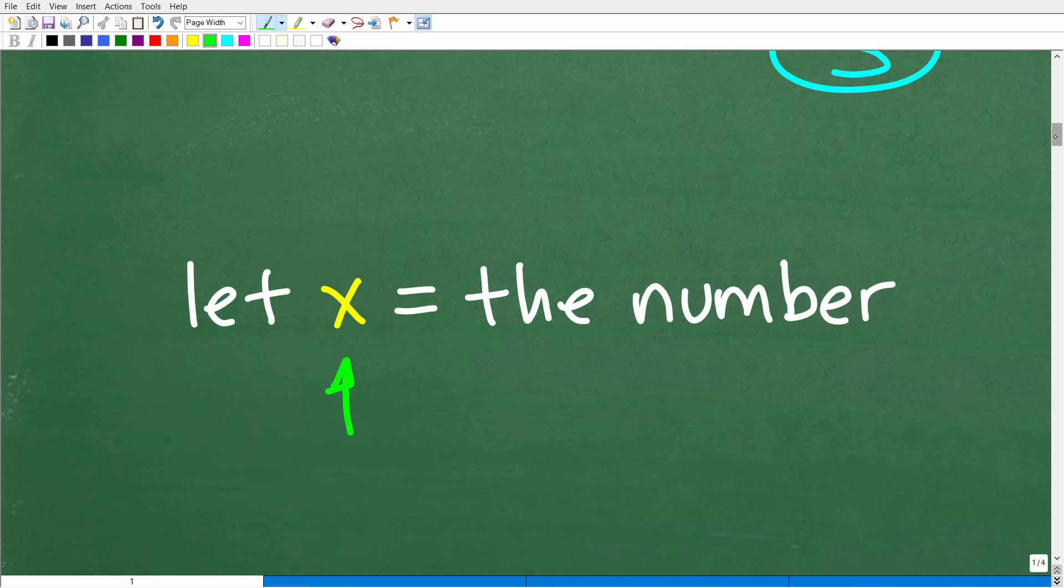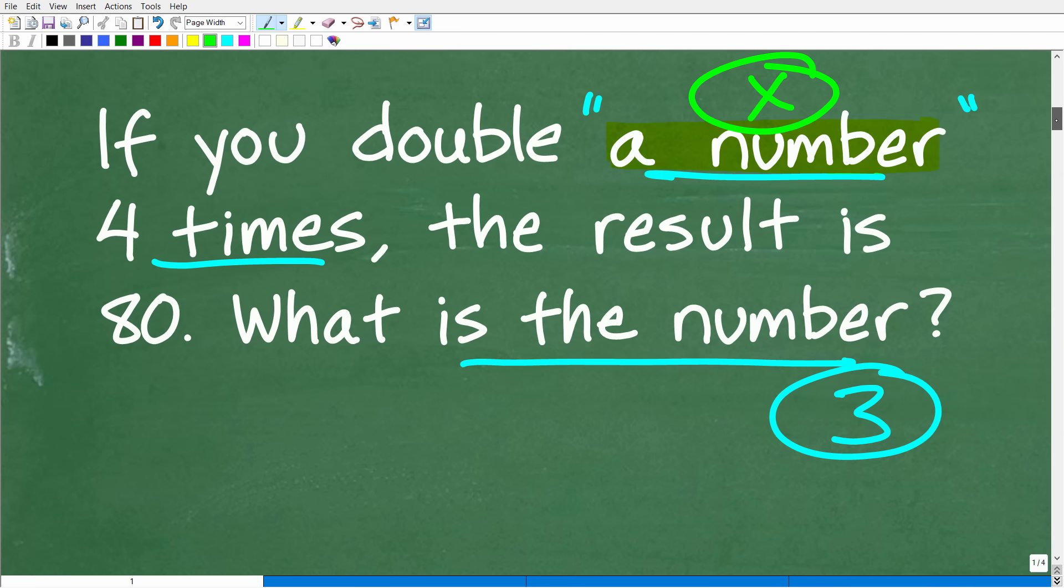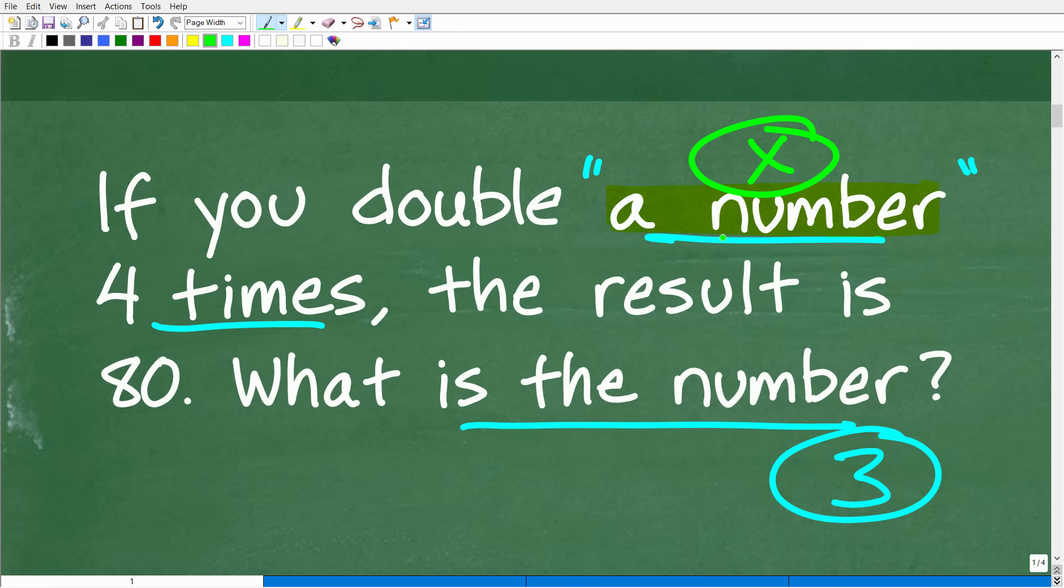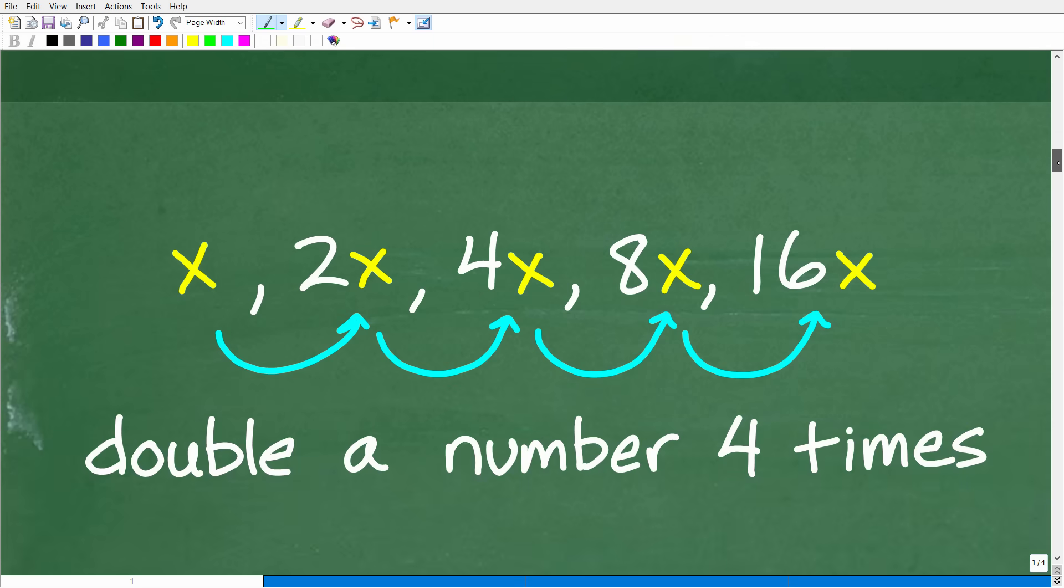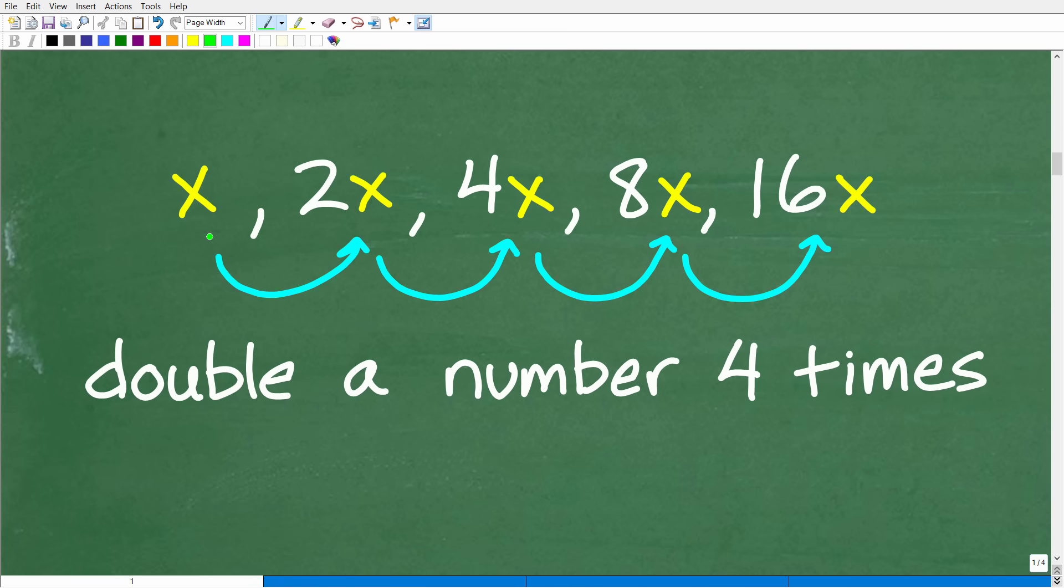So let's go ahead and model the problem by first establishing that we're going to let X equal this quote-unquote number. All right, so this is what our variable is going to be equal to. Now we have to kind of think about this problem, right? So, well, if we have this number, okay, and we're going to call that number X, we're going to double this number four times. Okay, so what does that look like? Well, let's go ahead and double this number four times right now. So here is our number X. If we double this number one time, and so, for example, if I have three, if I double three, that would be six. So doubling means we're going to multiply by two, right? So here is our first double. So that gets us to 2X.